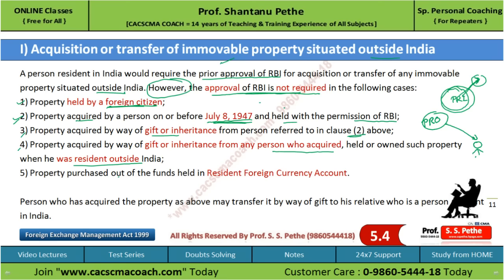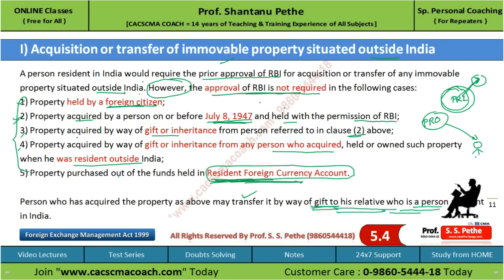Fifth: property purchased out of funds held in a Resident Foreign Currency account - you can use these funds to acquire immovable property situated outside India without prior approval. Remember all five points as case law can come on this. Finally, these regulations also say that if you have acquired immovable property outside India as per any of the above five points, you have the right to transfer it by way of gift to a relative who should be a person resident in India.